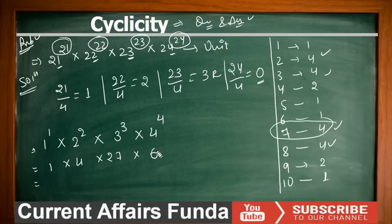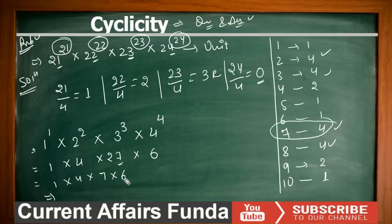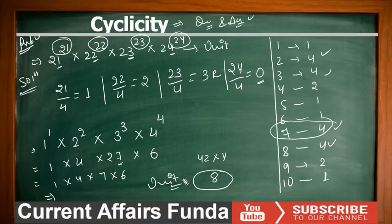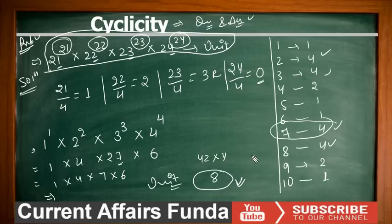Now multiply all the unit places: 1 × 4 × 7 × 6. First, 4 × 7 = 28, take unit digit 8. Then 8 × 6 = 48, take unit digit 8. So the unit place of the entire expression is 8.